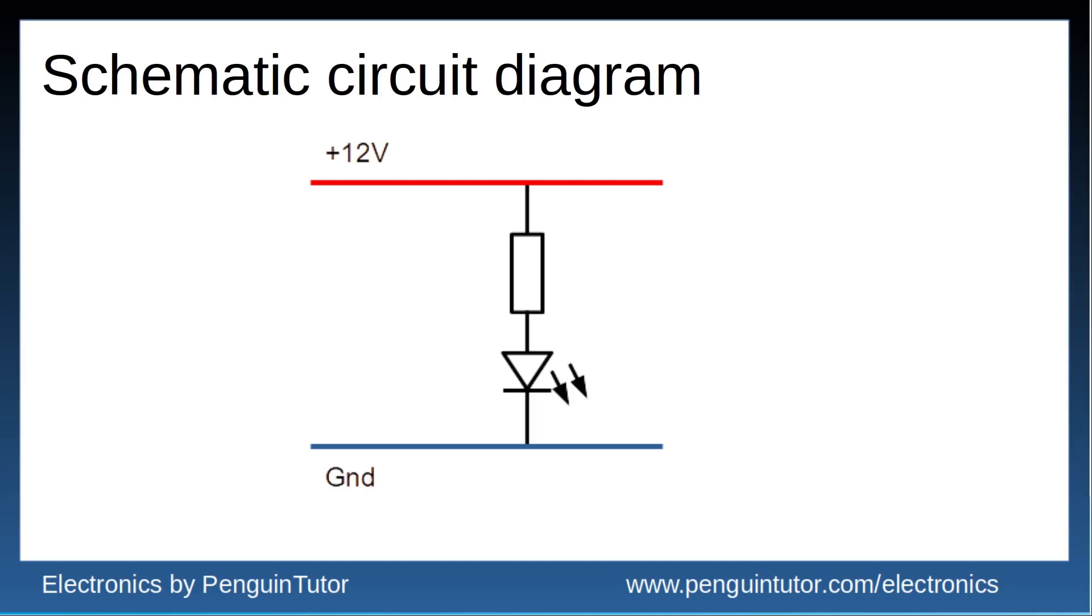With the resistor in series with the LED we just subtract the voltage dropped across the LED and we know the voltage across the resistor. The voltage dropped across the LED is given in the data sheets. A typical value for a red LED is 2 volts. So with our 12 volt power supply and a red LED that drops 2 volts, the voltage across the resistor is 10 volts. This is the value for V to use in the Ohm's law calculations.